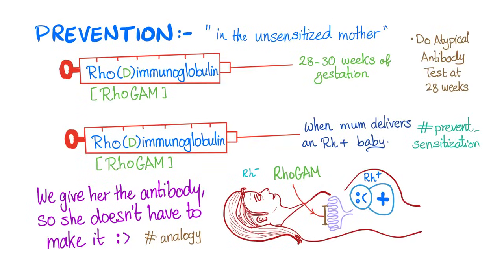This disease is preventable. Since the first pregnancy is fine, we can prevent it in subsequent pregnancies. When mommy is pregnant, at 28 weeks of gestation, we perform an atypical antibody test to see if the mother is sensitized. If already sensitized, this drug cannot help. This drug — called RhoGAM or Rho-D immunoglobulin — is only used if the mother is unsensitized. We give it at 28 to 30 weeks of pregnancy, and again during or just after delivery if the baby is RH positive, to prevent subsequent pregnancy problems.